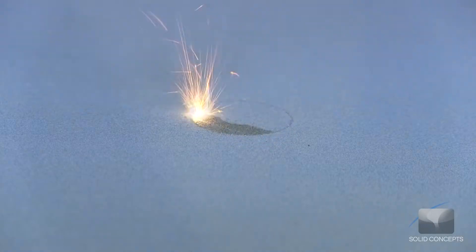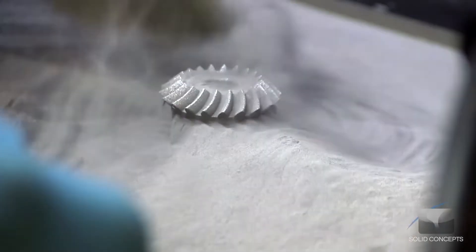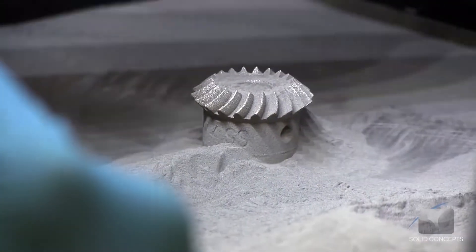The DMLS machine continues to sinter layer upon layer, building from the bottom up. As the part is built, support structures are added to give supplemental strength to fine features and overhanging surfaces.